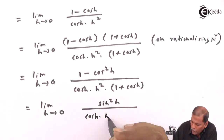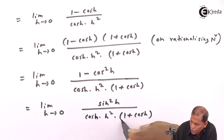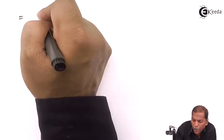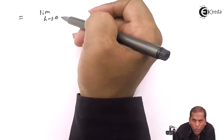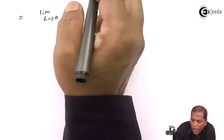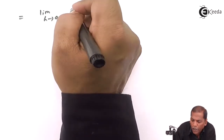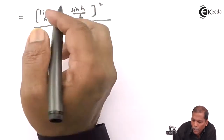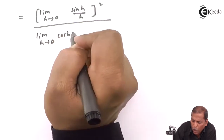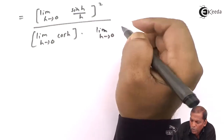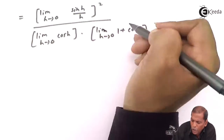Now we separate and adjust the limits. Taking sin²h/h² together, we write it as [sin h / h]² times the remaining terms. So we have: limit h→0 of (sin h / h)² divided by limit h→0 of cos h times limit h→0 of (1 + cos h) in the denominator.